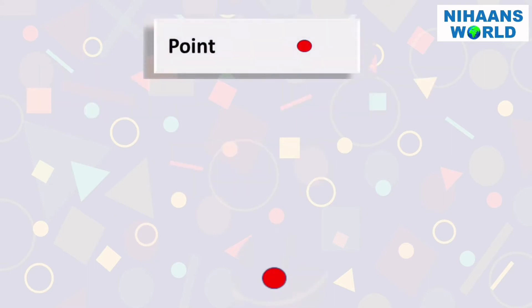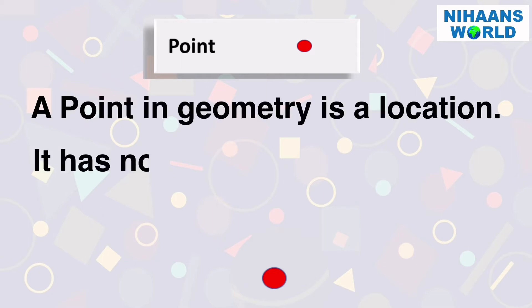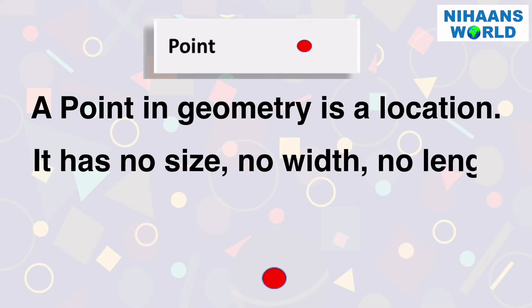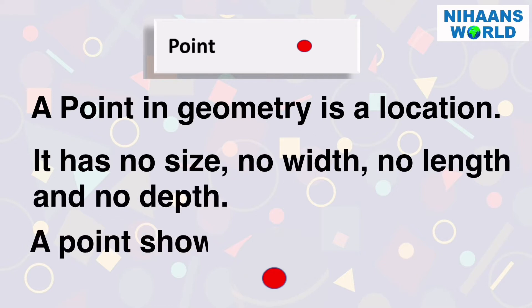What is a point? A point in geometry is a location. It has no size, no width, no length and no depth. A point is shown by a dot.